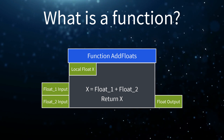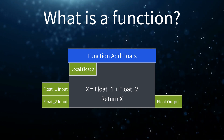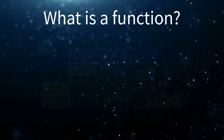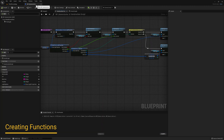Now let's go ahead and jump into Unreal to see how it's done. And now that we're back in Unreal, let's go back to our Blueprint class and click on Event Graph.